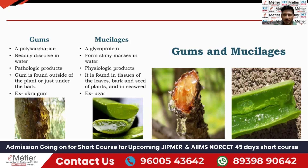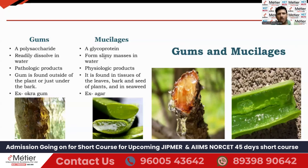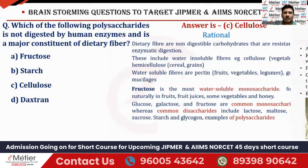You also know the aloe vera plant — if you cut it, a gel-like substance is present, visible in the image. This gel-like substance is called glycoprotein. It is also a polysaccharide. Both gums and this gel substance are water-soluble polysaccharides.